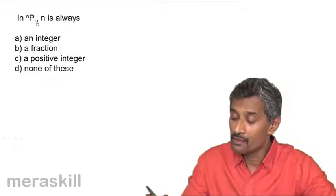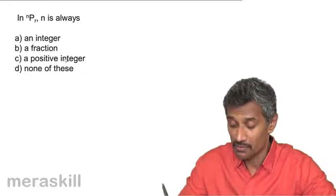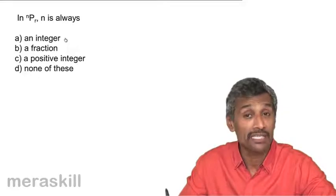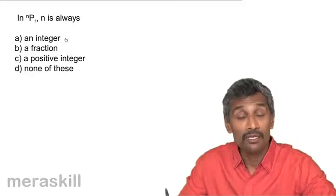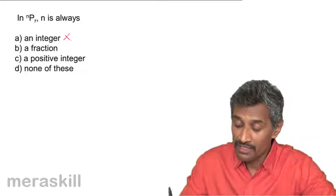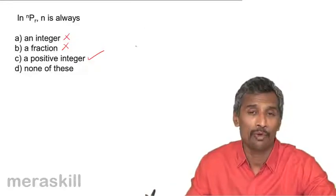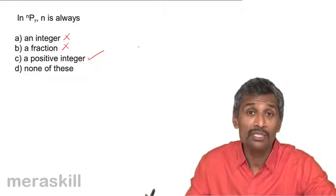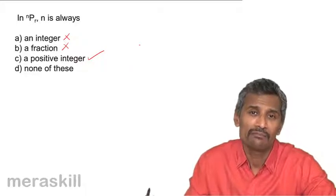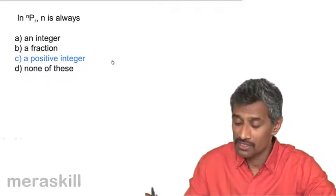Now we have a question: in NPR, N is always what? Is it an integer? Is it a fraction? Is it a positive integer? Or none of these? Now, it cannot be just any integer — when you say integer, it could also mean zero, minus one, minus two, minus three, which it is not. N is the number of terms and hence it cannot be a general integer. It cannot be a fraction because the number of terms can never be a fraction. Yes, it is a positive integer — N stands for the total number of items out of which we need to select R. So it is going to be a positive integer.